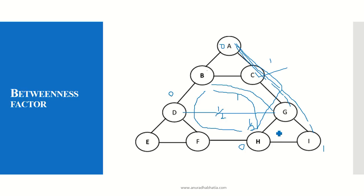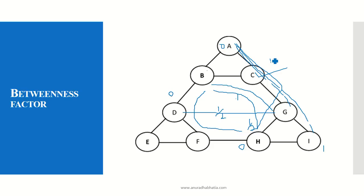E to F, E to H, E to I values are all 0. G to H, G to I, and H to I values are all 0. The betweenness centrality for node C is also 6: three paths give 3, and then four more paths giving 1 each is 5, plus 0.5 plus 0.5 equals 6. So betweenness centrality for node C is 6.